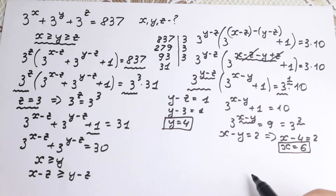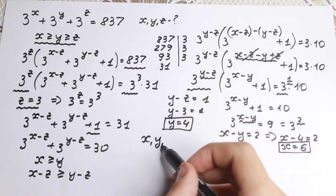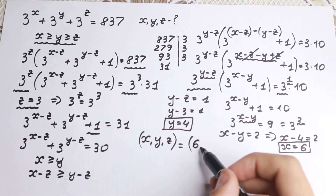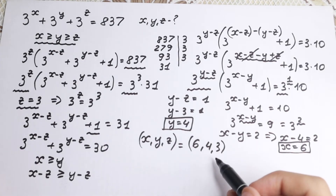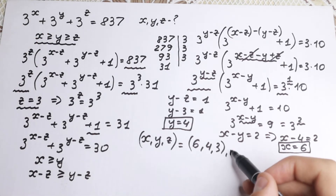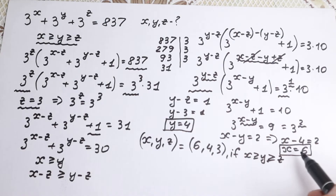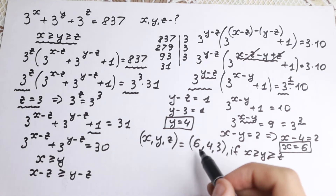So our solution looks like x equals 6, y equals 4, z equals 3. But we made an assumption at the start that x is greater or equal than y, and y is greater or equal than z. We need all combinations, so we must find every permutation of 6, 4, and 3.